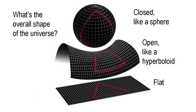Anything that has mass curves the space-time nearby. By the same token, all of the mass in the universe combined curves all of space-time. The big question is: what's the nature of this overall cosmic curvature? There are three possibilities. The surface of the universe might be closed, like that of a sphere. It might be open, stretching away forever in all directions, as in the case of a hyperboloid. Or it might be exactly flat. In their original form, the field equations of general relativity insist that the universe can't be static — it must be either expanding or contracting.